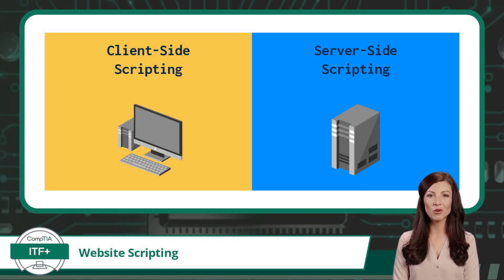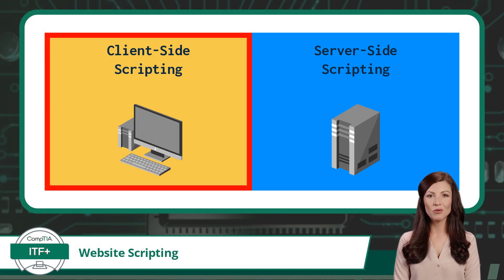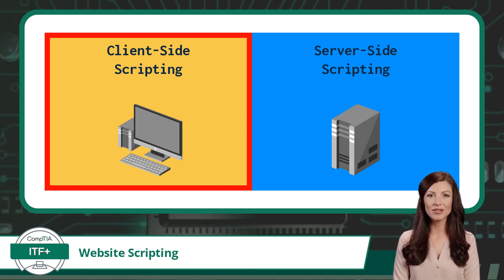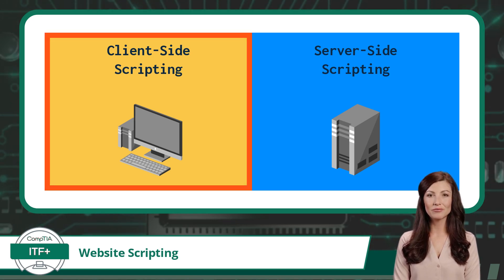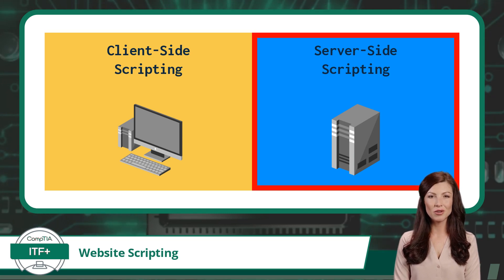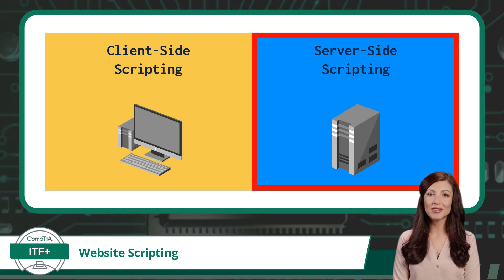With web scripting, there are two primary types: client-side and server-side. Client-side scripting occurs directly within the user's web browser. It allows for interactive elements, like image carousels and form validations, without relying on constant communication with the server. On the other hand, server-side scripting takes place on the web server itself. It handles tasks that require data processing, like database operations or user authentications, and then sends the results to the user's browser.